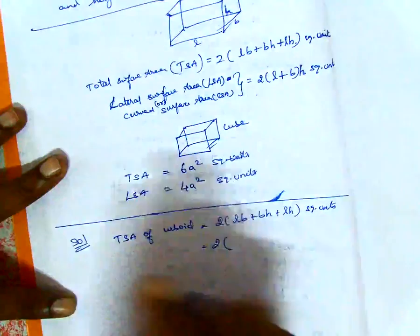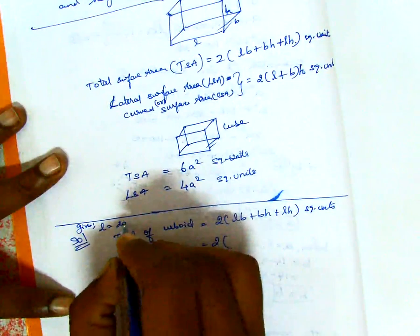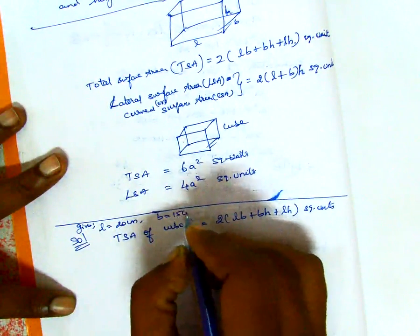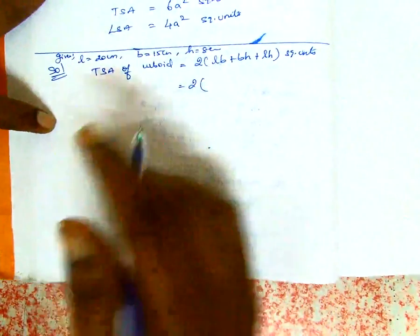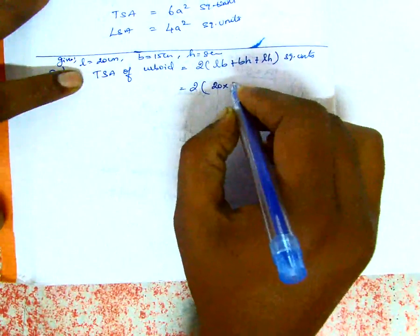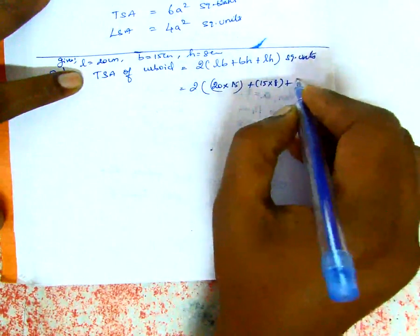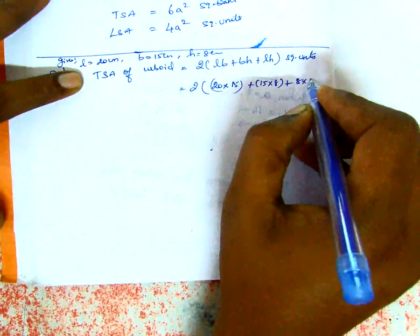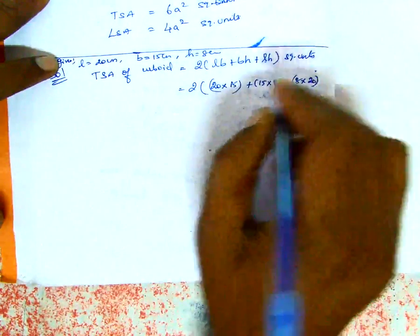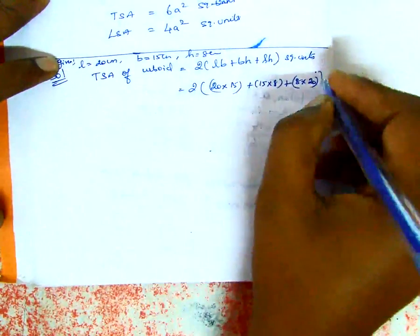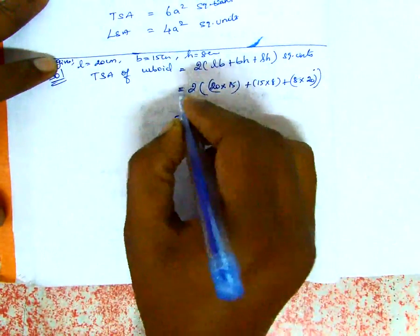Given: length = 20 cm, breadth = 15 cm, height = 8 cm. Substituting: 2 into (20×15 + 15×8 + 8×20). That gives us 2 into (300 + 120 + 160).